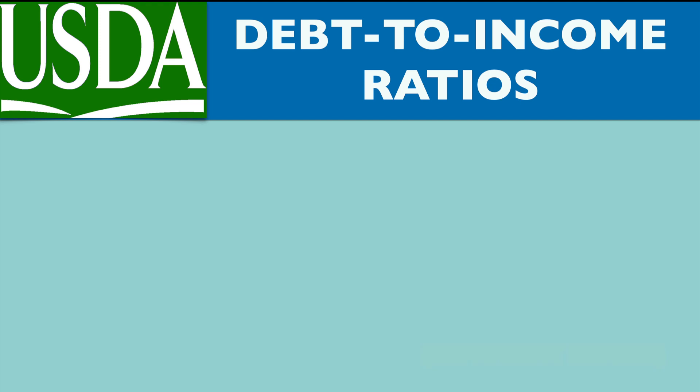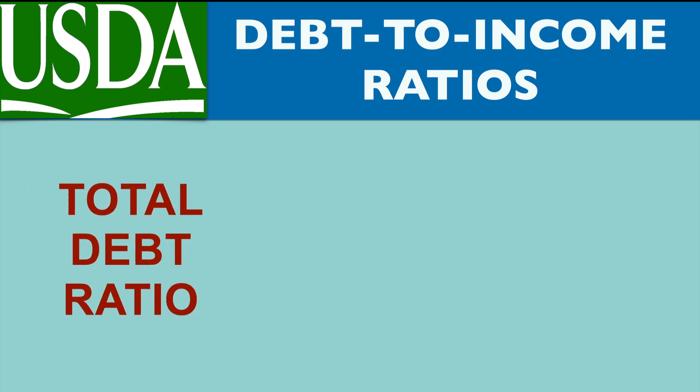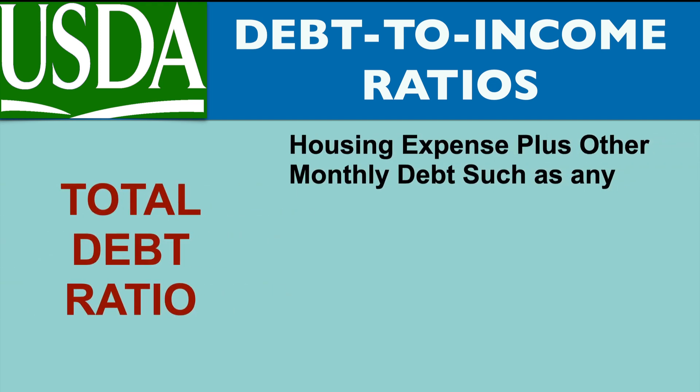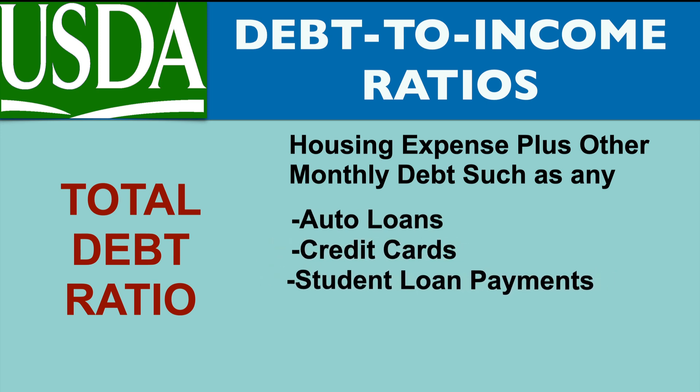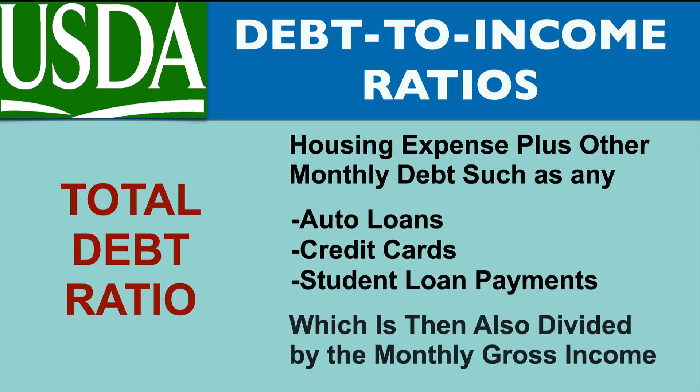Additionally, your total debt ratio consists of that housing expense plus other monthly debt such as any auto loans, credit cards, and student loan payments, which is then also divided by the monthly gross income.